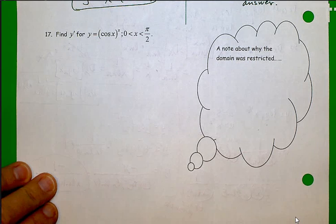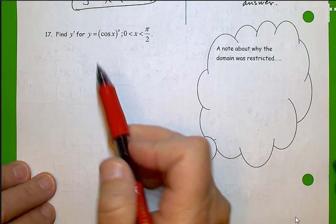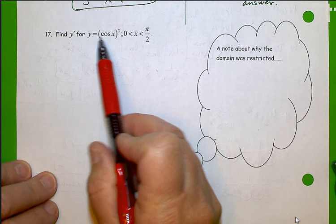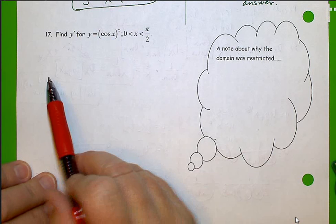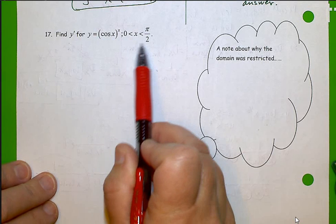Okay, here's our first example for logarithmic differentiation. Find y prime for y equals cosine x raised to the x power, for x is between 0 and π over 2. We'll talk about that restriction when we're finished with the problem.